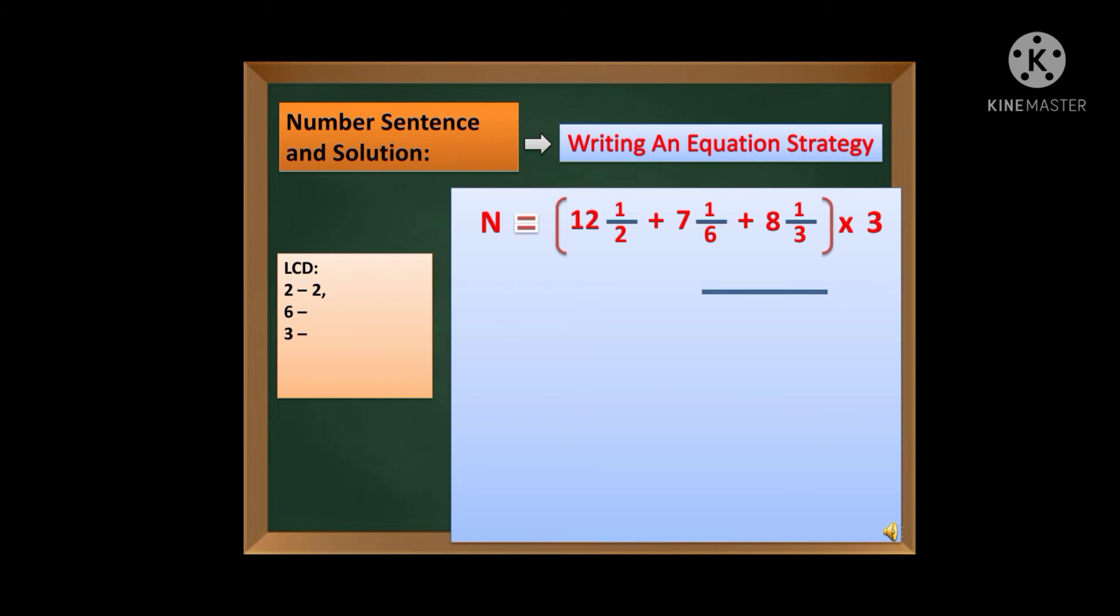Okay, so number sentence natin we have 12 and one-half plus 7 and one-sixth plus 8 and one-third times 3. Dahil dissimilar sila, again, kukunin natin na kanyang LCD. So we have 2, 6, and 3. So kung napapansin nyo po, si 2, 6, and 3 mayroon pong parehong 6, kaya LCD natin is 6. Ibig sabihin bagong denominator natin is 6. Okay, so pagsamasamahin natin ang mga whole number at pagsamasamahin naman natin ang mga fractions. Dahil si fractions, ang mga fractions ay mayroon ng bagong denominator, kaya isa-isayin naman natin. 6 divided by 2 is equal to 3, times 1 is 3.